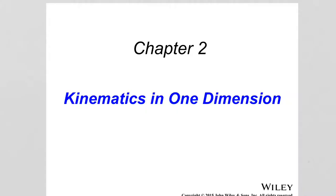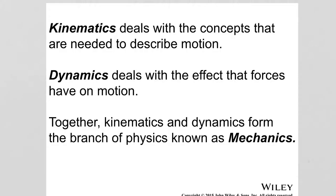Chapter 2 is titled Kinematics in One Dimension. In this chapter, I will discuss the different quantities used to describe the motion of an object in one dimension. The science of moving objects has two branches: kinematics, which deals with concepts needed to describe motion, and dynamics, which deals with the effect that forces have on motion. Together, kinematics and dynamics form a branch of physics known as mechanics, and this first part of the course is mainly focused on mechanics.